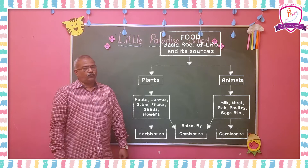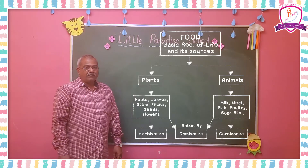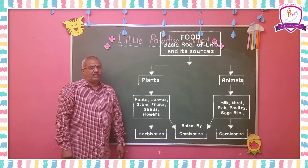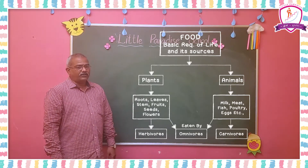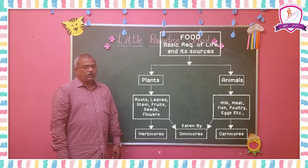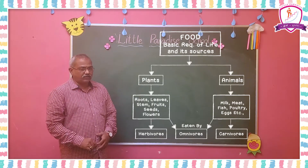According to food habits, animals are divided into three types: herbivores, omnivores, and carnivores.